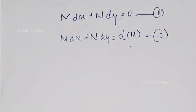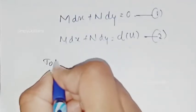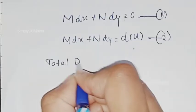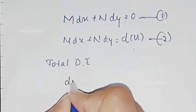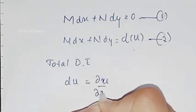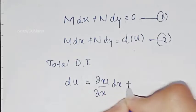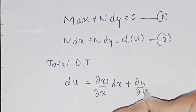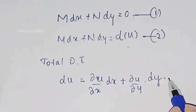In our previous video, we learned what an exact differential equation of first order is. Let us derive this. As you know, the total differential equation of two variables for the function u is: du = ∂u/∂x · dx + ∂u/∂y · dy, which is the total differential equation. Call this equation 3.